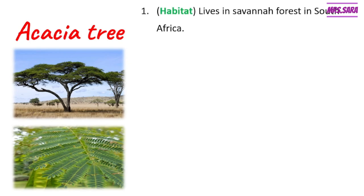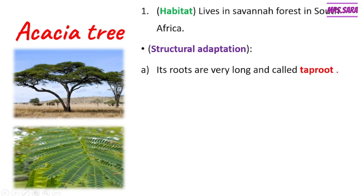So the habitat, or home, of acacia tree is savannah forest, found in South Africa. Acacia tree is a living organism, so like any living organism it has structural adaptation and behavioral adaptation. When I talk about structural adaptation, I talk about the structure of the acacia tree. Like any plant, it has roots, stem or trunk, leaves, flowers, and fruit. The first part: acacia tree has very long roots, which are called tap roots.